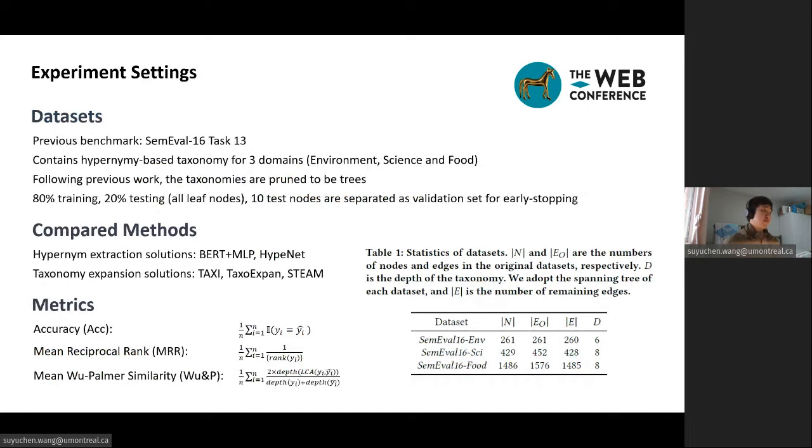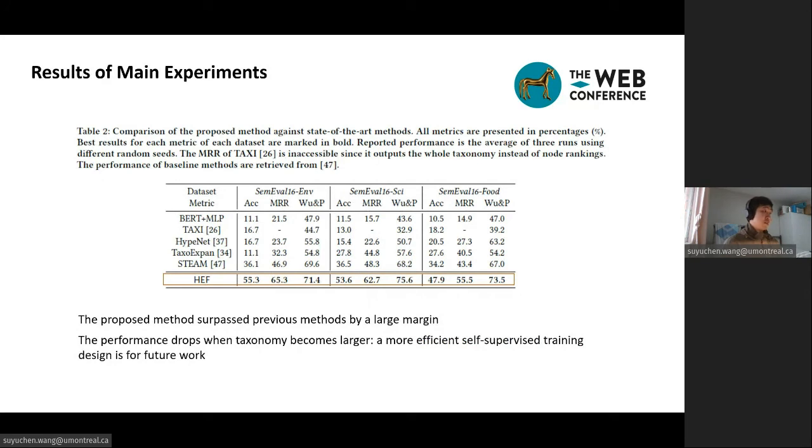And for experiment settings, we used the previous benchmark dataset, SemEval-16 Task 13. It contains hypernymy-based taxonomy for three domains: environment, science, and food. We follow previous work's scheme and prune the taxonomies into trees. With 80% of nodes for training, 20% of nodes for testing. Testing nodes are all leaf nodes, and 10 test nodes are separated, a validation set for early stopping. We compare our methods with two hypernymy-extraction solutions: BERT plus MLP and HypeNet, and also three taxonomy expansion solutions. TaxI is the winner of SemEval-16 Task 13, and TaxoExpan and STEAM were proposed in 2020. Our metrics are accuracy, mean reciprocal rank, and mean Wu-Palmer similarity. The statistics of datasets is shown on the right.